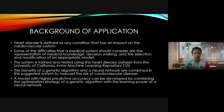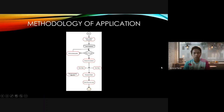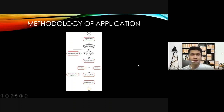A model with higher predictive accuracy can be developed by combining the optimization strategy of a genetic algorithm with the learning power of a neural network. I will now pass the methodology to Nur Ashraf. I will present the methodology of the application where you can see the flowchart.